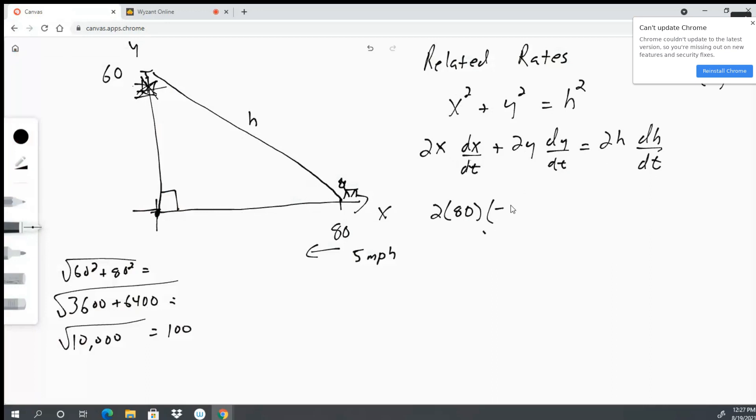So we know that the dog is walking in the negative direction at 5 miles per hour. Now we have 2y, y is 60, and dy/dt, well we're assuming that the tree is not growing, right. So this tree, the top of the tree is not moving at all, and what we're trying to do is figure out how the hypotenuse is changing.